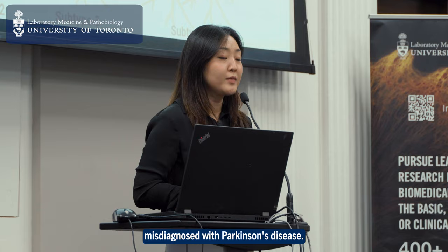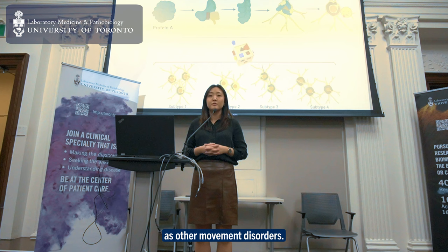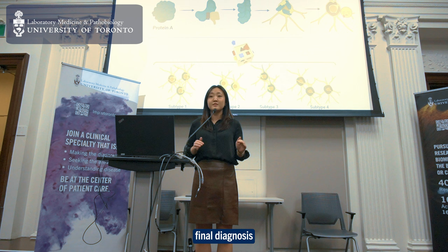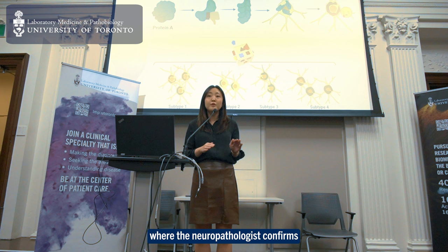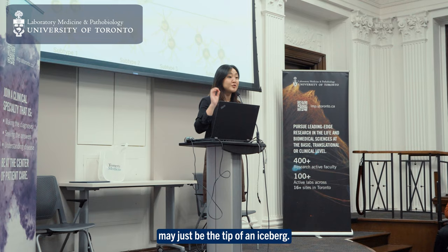Johnny was first misdiagnosed with Parkinson's disease. This is because multiple system atrophy patients can have similar symptoms that may be mistaken as other movement disorders. So the only way to make a final diagnosis is through an examination of the brain at autopsy, where the neuropathologist confirms the presence of these bad protein A's in the brain.